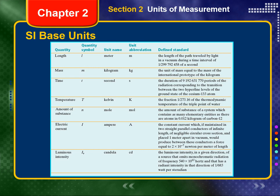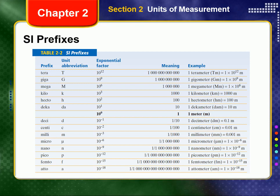The 7 SI base units and their standard abbreviated symbols are listed in Table 2-1 on page 34 of your text or on the screen now. All other SI units can be derived from these fundamental units. Prefixes added to the names of the SI base units are used to represent quantities that are larger or smaller than the base units, as shown in Table 2-2 on page 35. For example, the prefix centi, abbreviated c, represents the exponential factor of 10 to the negative second power, which equals 1 divided by 100. Thus, 1 cm equals 0.01 meters, or one one-hundredth of a meter.